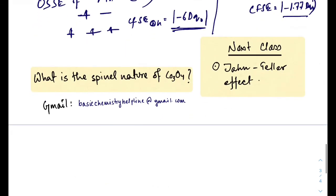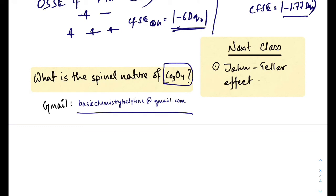Homework: determine the spinel structure of Co₃O₄. For cobalt, oxide ion acts as a strong field ligand, so there will be low spin — remember only cobalt-3 gives low spin complexes in the presence of oxide ions. Calculate the OSSE of both Co²⁺ and Co³⁺ and comment below with the spinel type. For help, email basicchemistry at the provided Gmail. Our next class will be on the Jahn-Teller effect and Jahn-Teller distortion. Thanks for watching, goodbye.